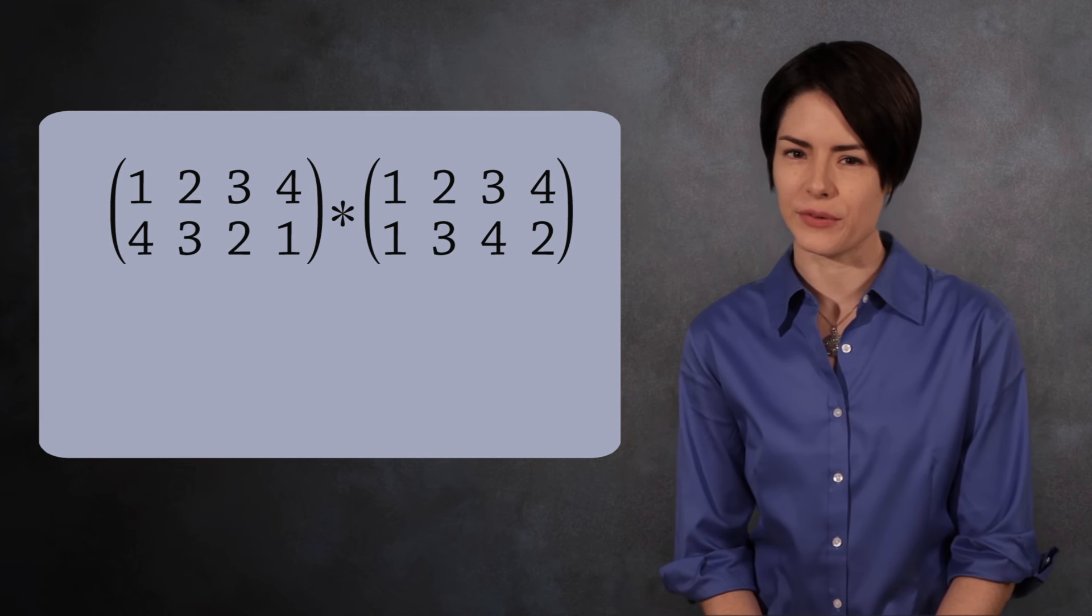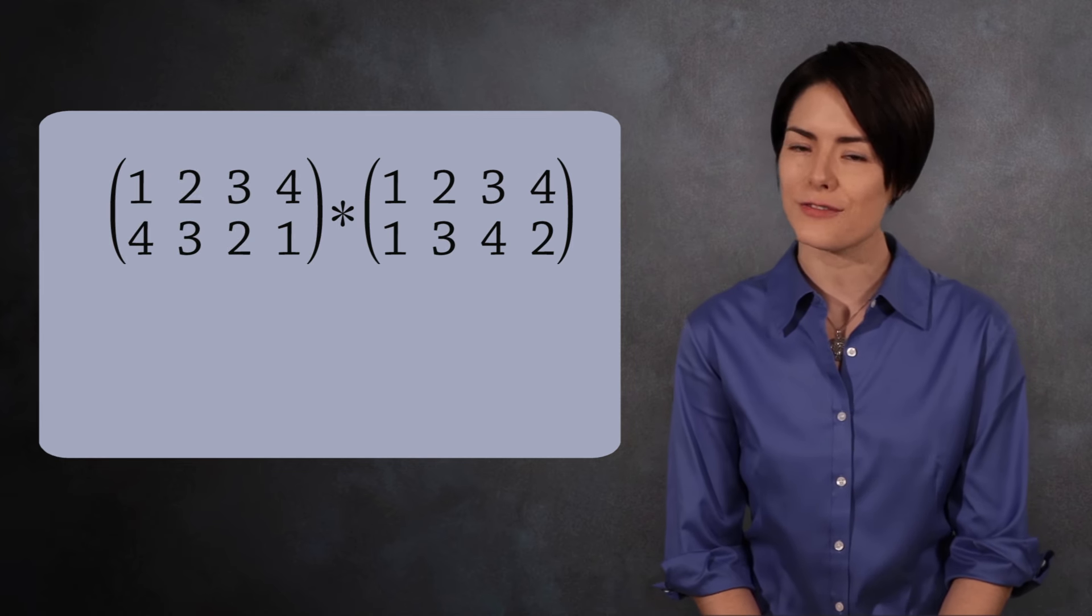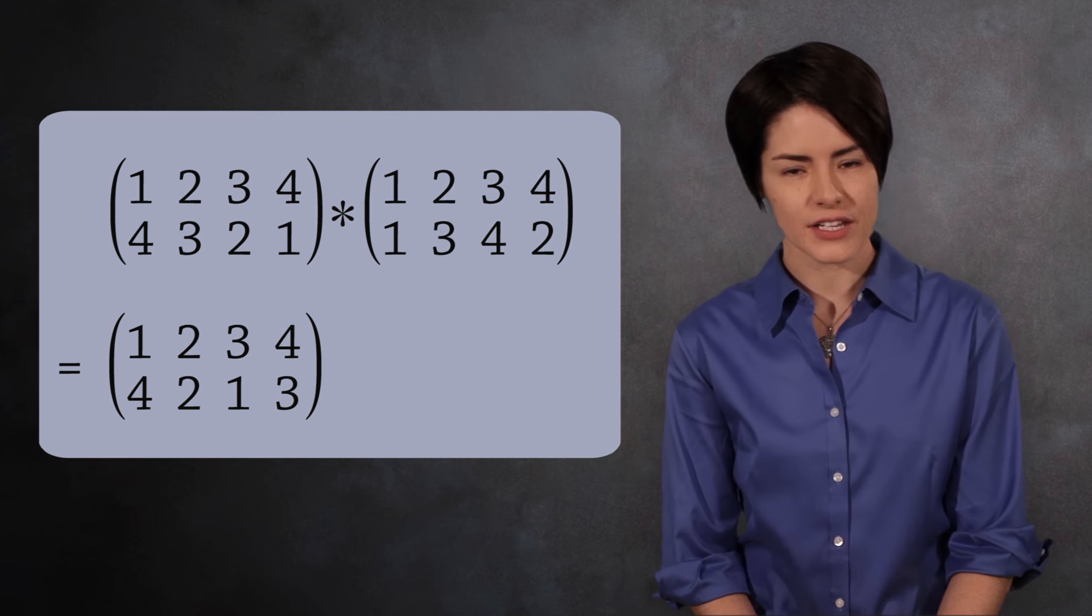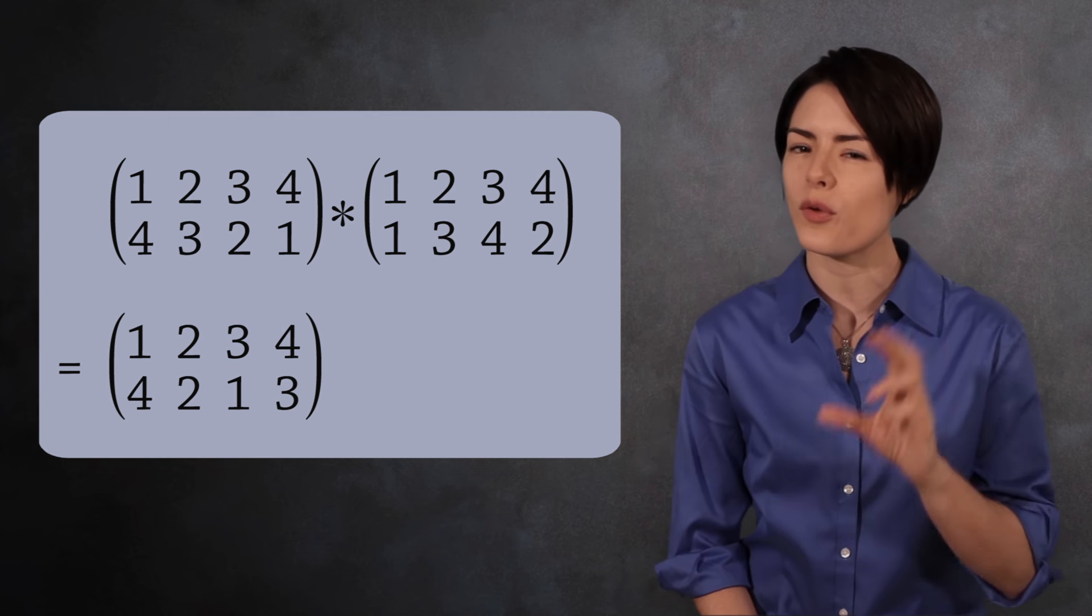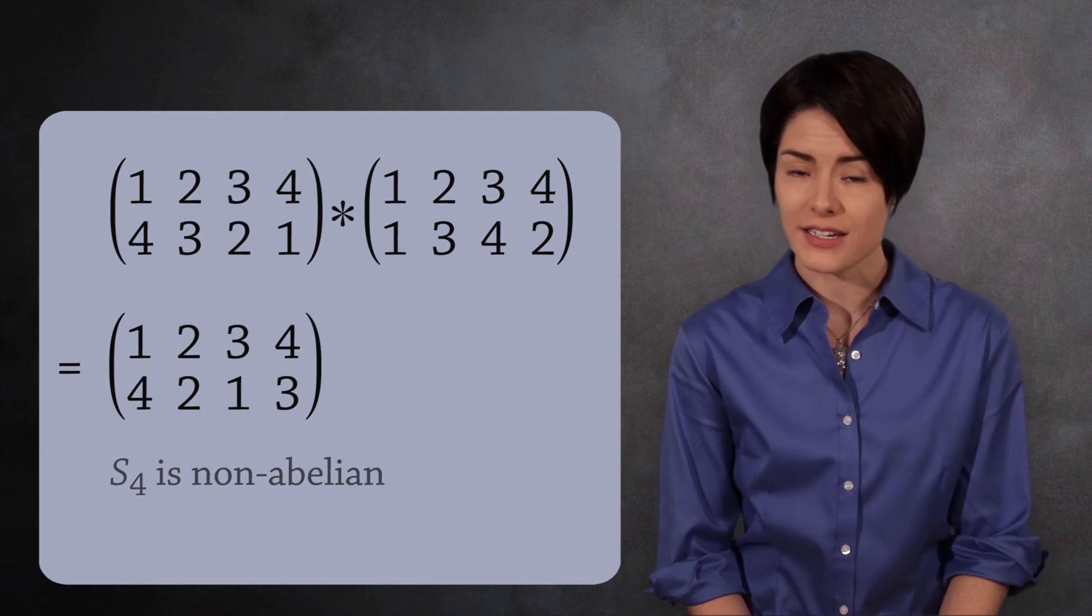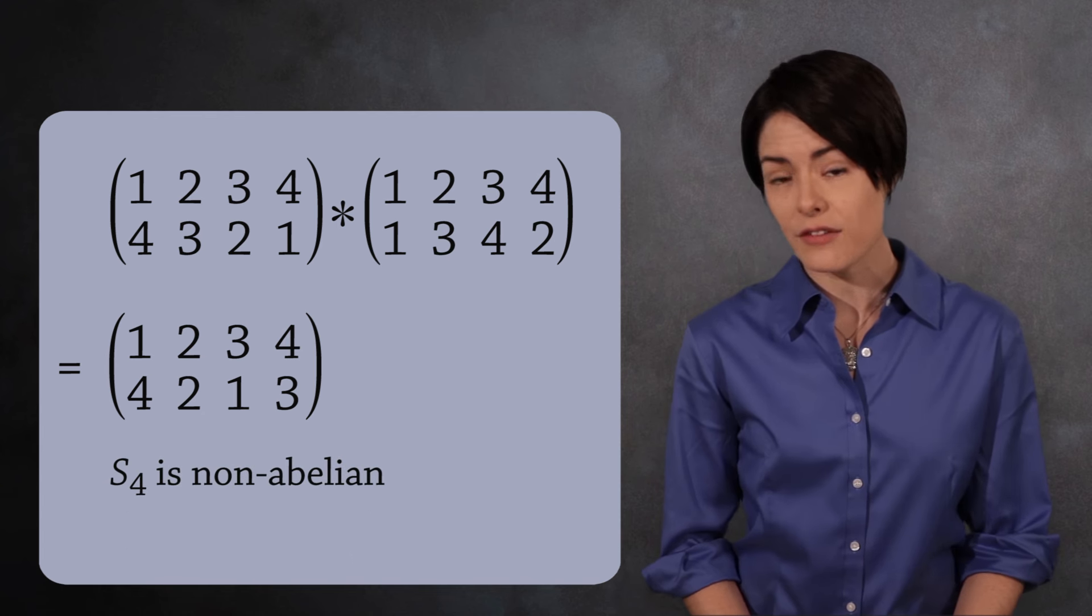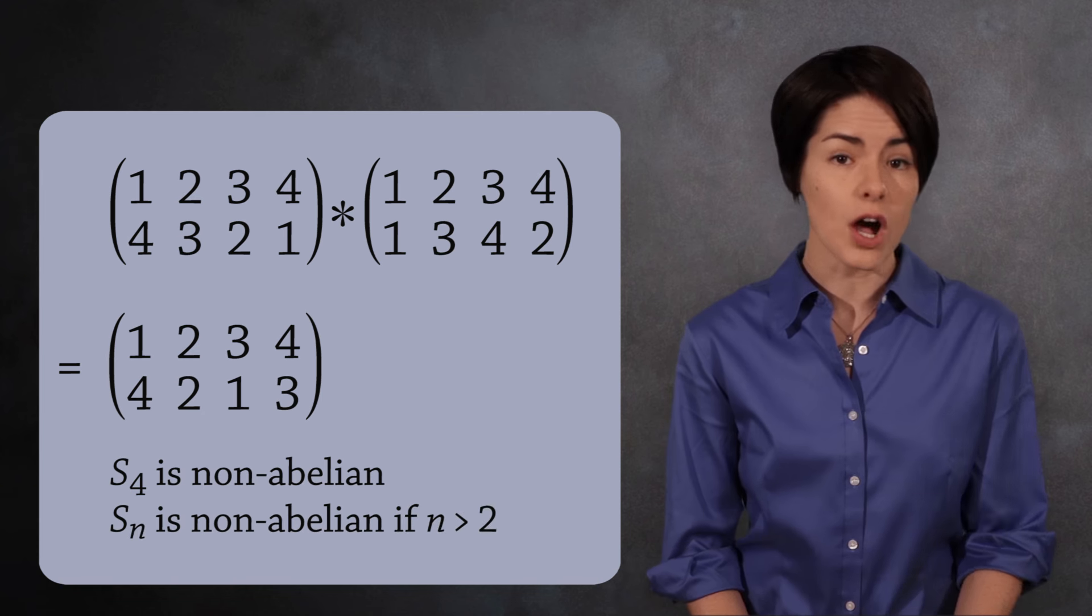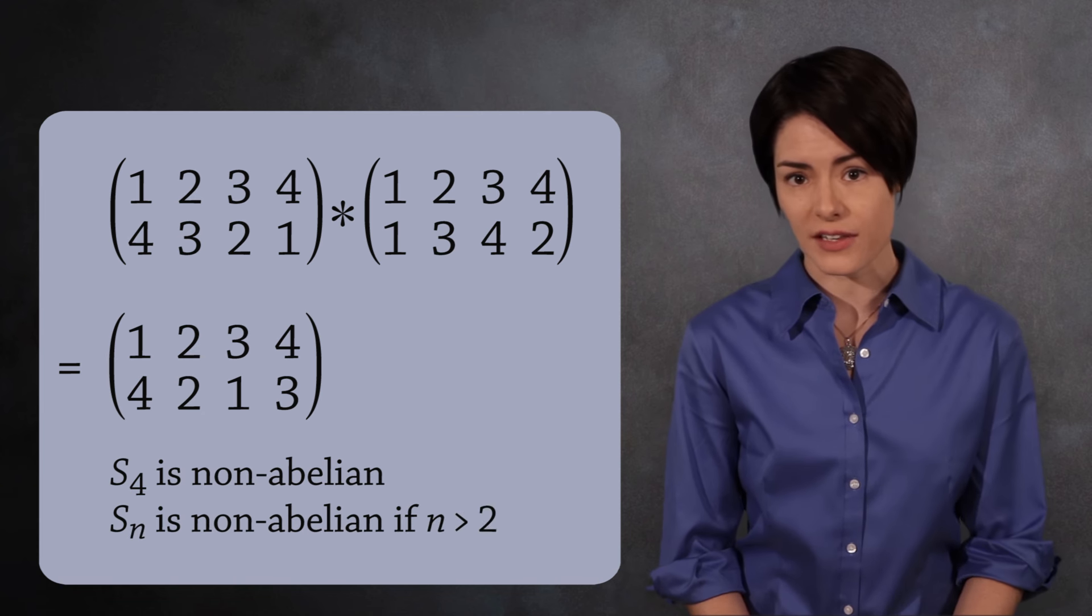Now look what happens if we multiply them in the reverse order. 4, 3, 2, 1 times 1, 3, 4, 2. Here the result is 4, 2, 1, 3. Notice that we get a different permutation when we switch order. The group S4 is not commutative. It is a non-abelian group. In fact, aside from the groups S1 and S2, all symmetric groups are non-abelian.